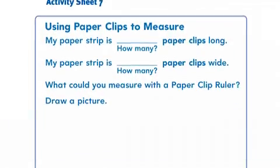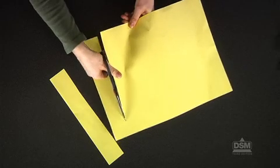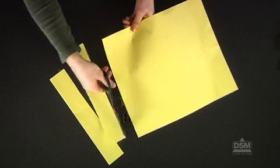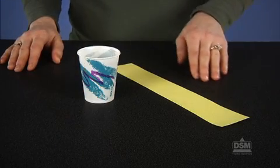To prepare for the activity, make a copy of Activity Sheet 7 for each student. Cut each sheet of construction paper into 8 strips, approximately 5 cm wide. Each student will need 10 large paper clips in a paper cup and a strip of construction paper.